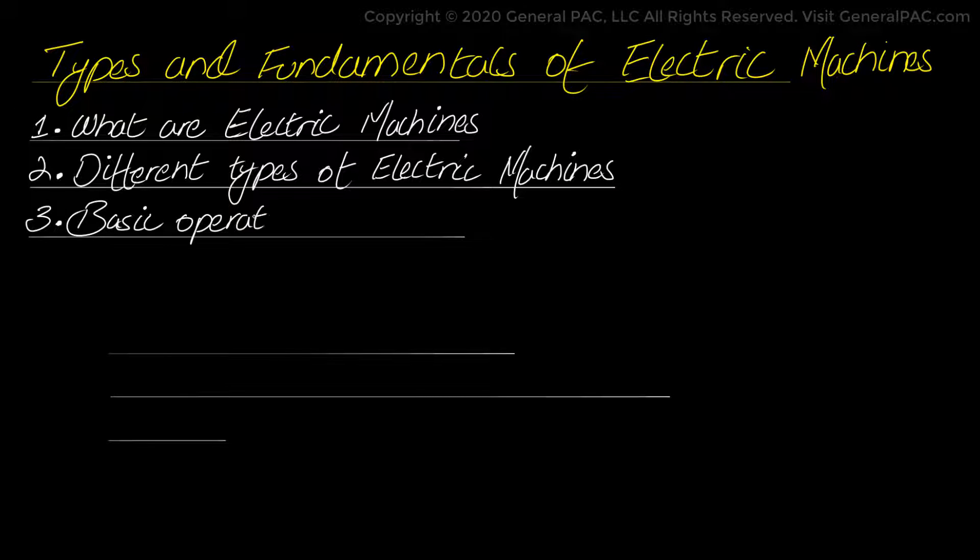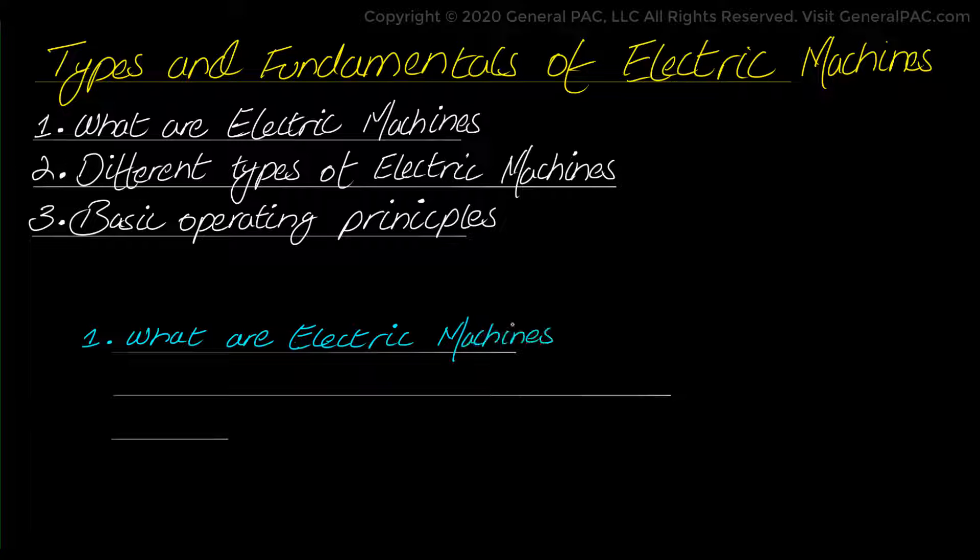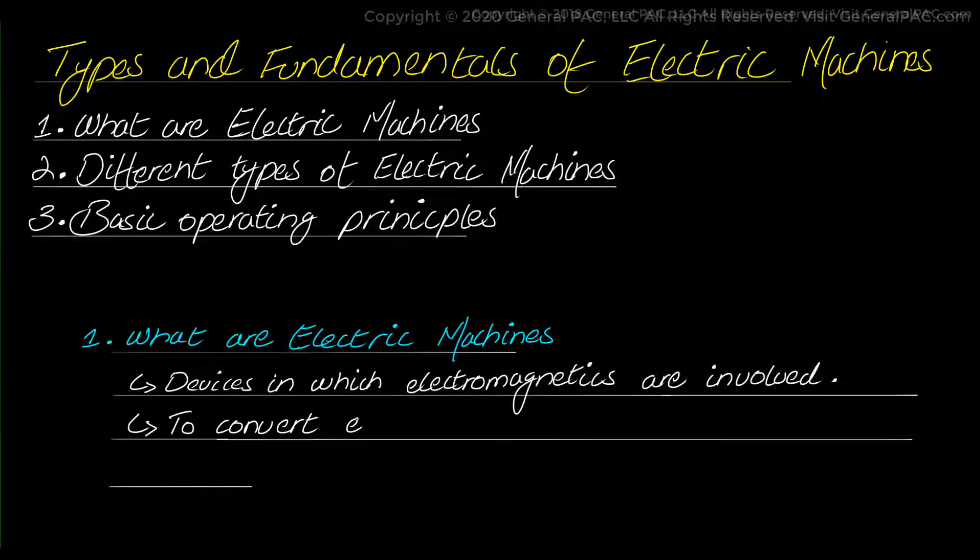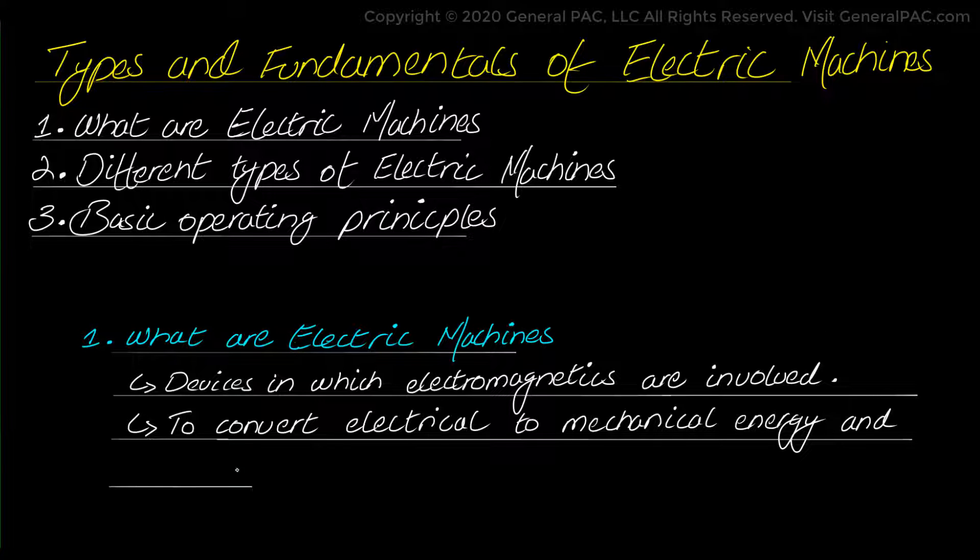What are the basic operating principles involved? In simple words, electrical machines are defined as a device in which principles of electromagnetics are involved to convert electrical energy to mechanical energy and mechanical energy to electrical energy.